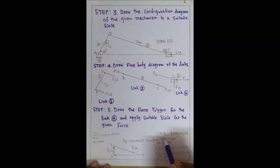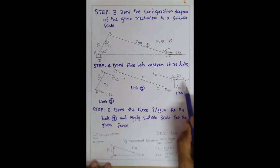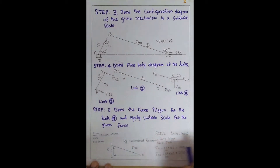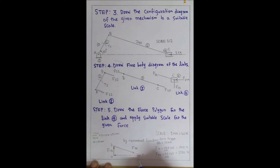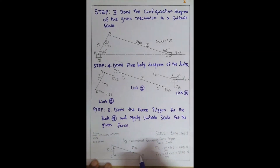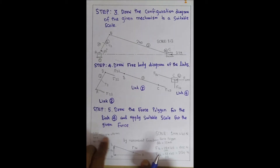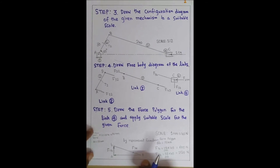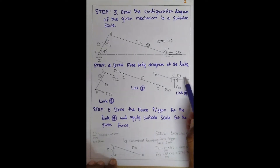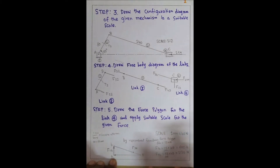We cannot directly draw 2 kN, so we fix a scale: 1 mm = 40 N. To represent 2 kN (2000 N), the length O to A equals 2000 ÷ 40 = 50 mm. So from point O, draw a horizontal line O to A of length 50 mm, in the direction of the applied force.